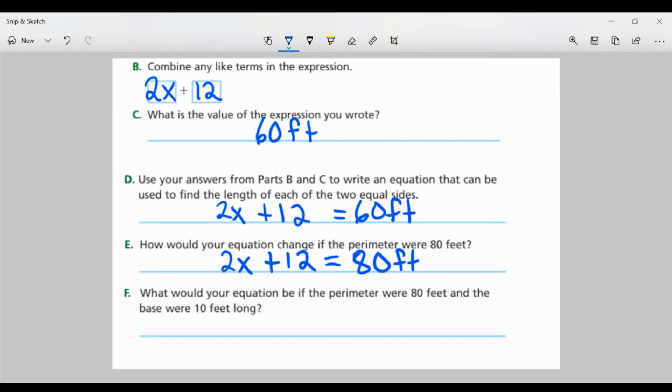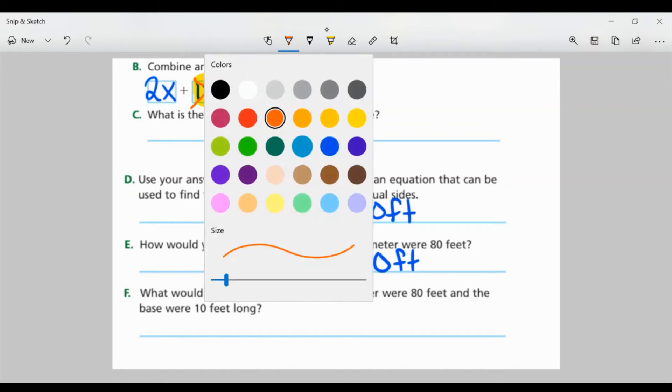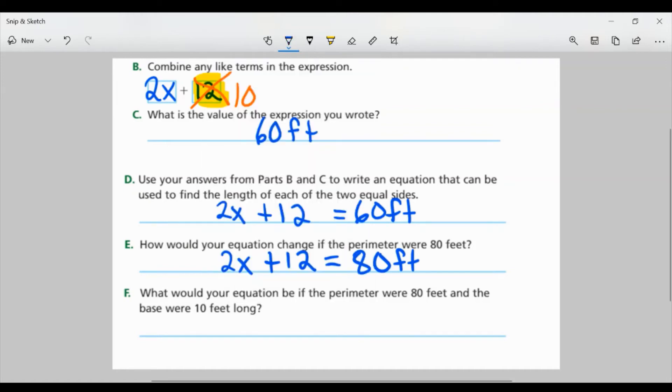Part F. What would your equation be if the perimeter were 80 feet and the base were 10 feet long? Well, the base was this value right here, right? 12 feet. That was the base of the triangle. If we change that to a 10, well, then that would be our new equation. I would have 2X plus 10. And we say that it equals 80 feet.